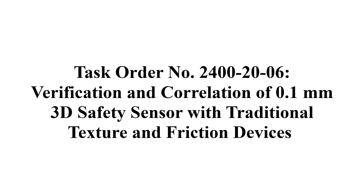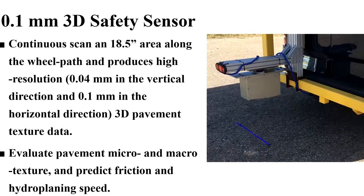Verification and correlation of the 0.1mm 3D safety sensor with traditional texture and friction devices. The 0.1mm 3D safety sensor continually scans an 18.5 inch area along the wheel path, producing high-resolution 3D pavement texture data. It is used to evaluate pavement micro and macro texture and predict friction and hydroplaning speeds.